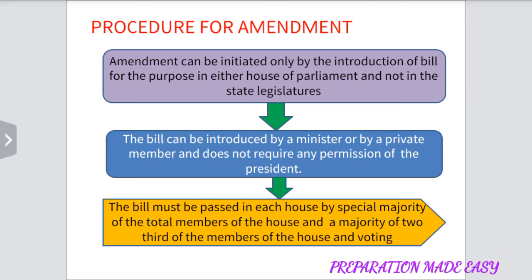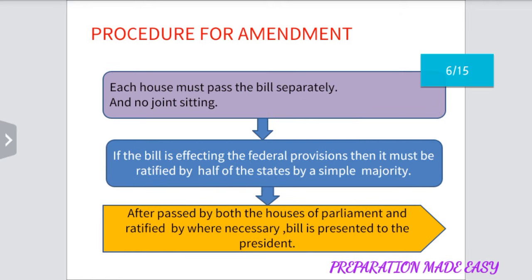Three, the Bill must be passed in each House by a special majority of total members of the House and a majority of two-thirds of the members of the House present and voting. Four, each House must pass the Bill separately and there is no joint sitting.